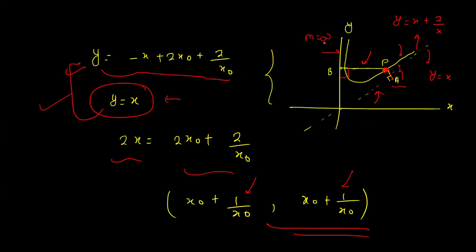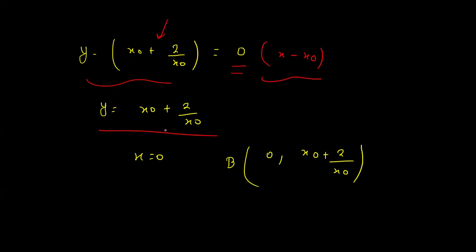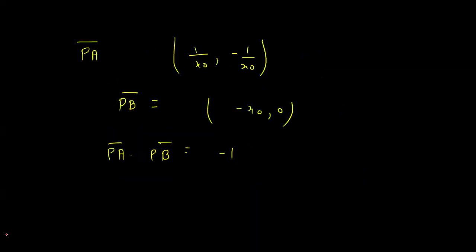Similarly, for the perpendicular to the y-axis: the y-axis has infinite slope, so the perpendicular line has slope 0. This horizontal line through P gives y = x₀ + 2/x₀. Since it meets the y-axis where x = 0, the foot point B has coordinates (0, x₀ + 2/x₀).